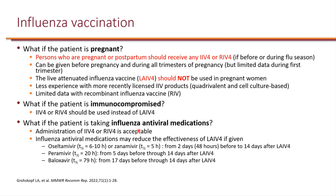What if the patient is taking influenza antiviral medications? Administration of inactivated or recombinant vaccines is not affected by antiviral agents. However, if someone is to receive the live attenuated vaccine, which needs to replicate in the body, antiviral medications will affect vaccine efficacy. When it comes to antiviral agents used for flu, half-life makes a difference. Peramivir and Baloxavir have much longer half-lives, whereas Oseltamivir and Zanamivir have shorter half-lives.